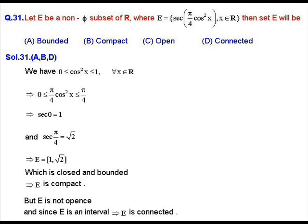Solution of question number 31. In this question, E is a non-empty subset of ℝ defined as E = {sec(π/4 · cos²x) : x ∈ ℝ}. We will determine properties of set E such as bounded, compact, open, or connected. We define f(x) = sec(π/4 · cos²x), so E is the range of function f.